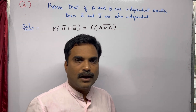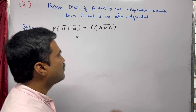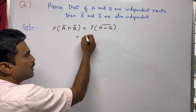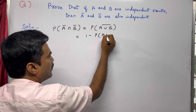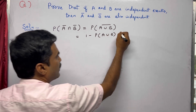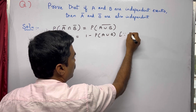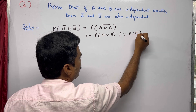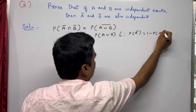As you know, P(A-bar) can be written as 1 − P(A). Similarly, P(A ∪ B) whole bar can also be written as 1 − P(A ∪ B), since P(A-bar) = 1 − P(A).